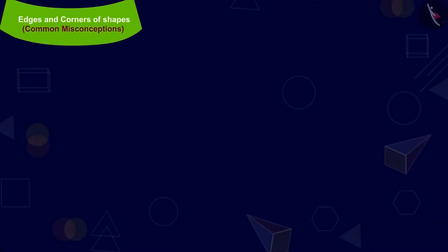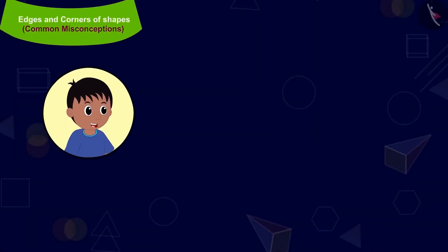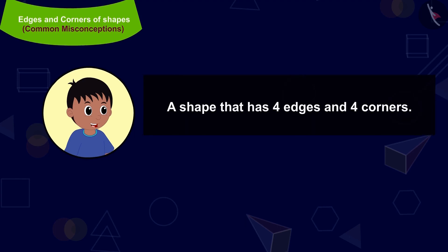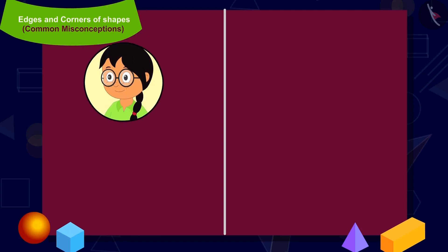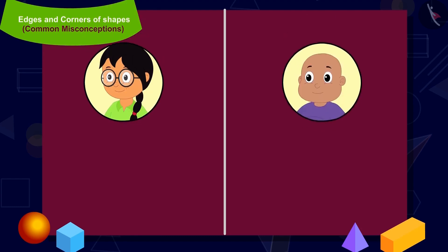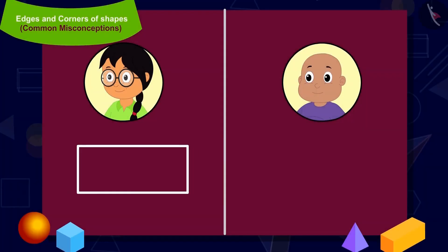Raju's first question is: make a shape which has four edges and four corners. Minu and Bablu both start making their shapes. Minu made one shape and Bablu has made another shape.